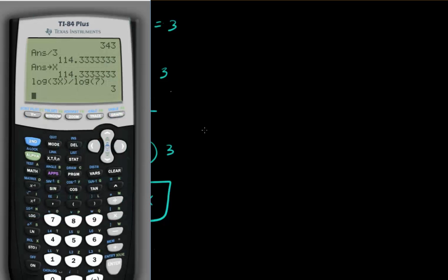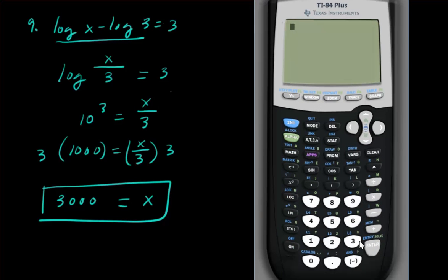Let's go ahead and check. So we have 3,000, I'm going to store that as x. I have log of x minus log of 3, and that equals 3. Good job.